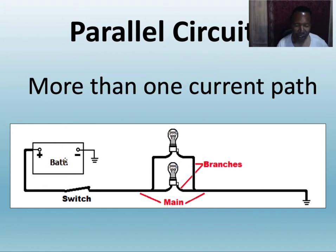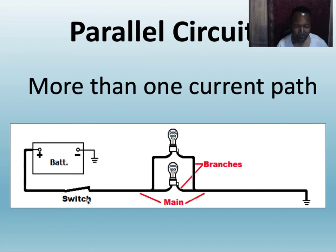Each leg should always equal source voltage; if it doesn't, something is wrong. On a parallel circuit, the voltage drop across each leg is source voltage. Remember, to do a voltage drop, the circuit has to be complete — switch closed, current flowing — it cannot be interrupted, there cannot be an open in the circuit.